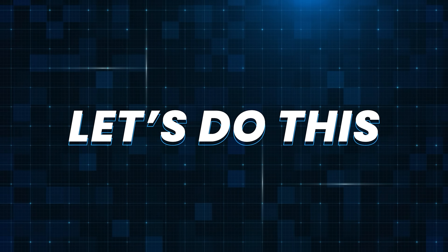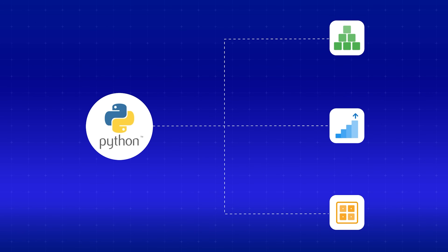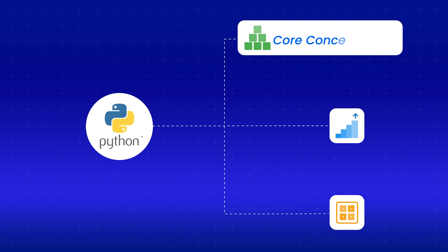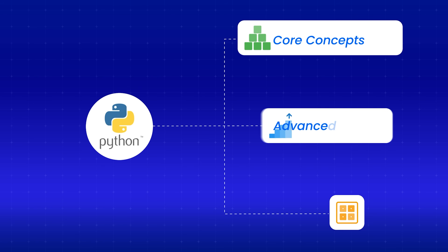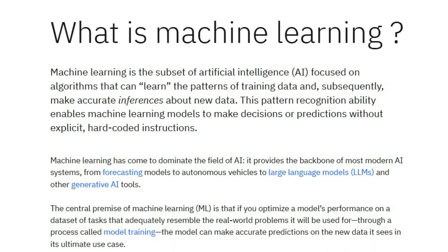Before we dive in, you need to understand something that most beginners get wrong. Python is not one thing. It's three different things based on what you want to do. There are core concepts every programmer must know, advanced concepts for people going into software engineering, and specialized libraries for data science and machine learning.